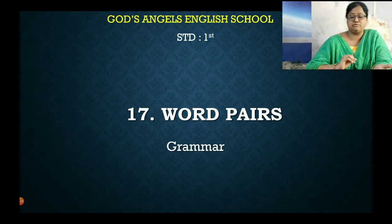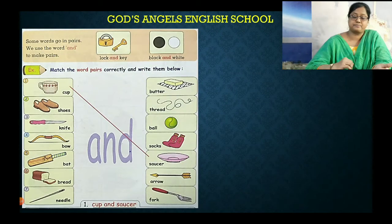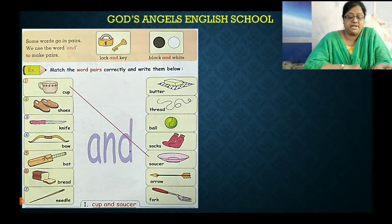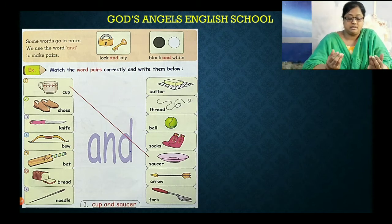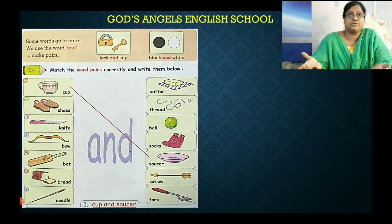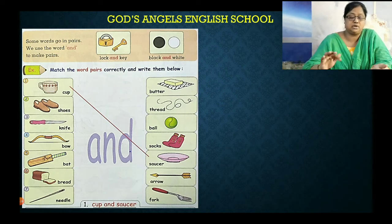Now lesson number 17 — we will do word pairs. Some words go in pairs. We use the word 'and' to make pairs. Pairs याने दो चीज़ें — जैसे cup and saucer, black and white, shoes and socks, book and pencil. यह सारा कुछ हम pairs में ही use करते हैं, उसी को हम यहाँ पर करेंगे.